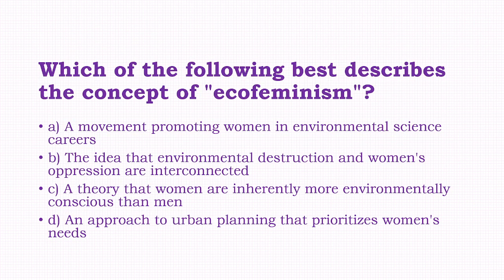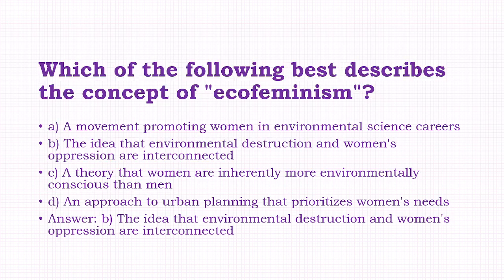Which of the following best describes the concept of eco-feminism? Options: a movement promoting women in environmental science careers, the idea that environmental destruction and women's oppression are interconnected, a theory that women are inherently more environmentally conscious than men, an approach to urban planning that prioritizes women's needs. The answer is option B, that is the idea that environmental destruction and women's oppression are interconnected.